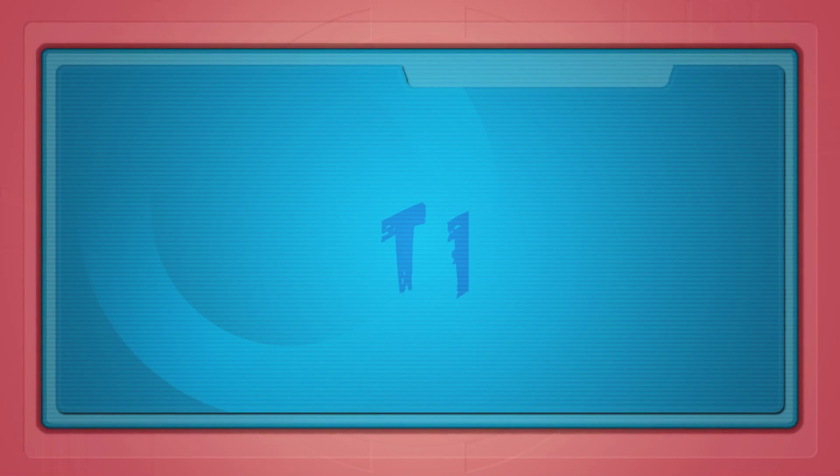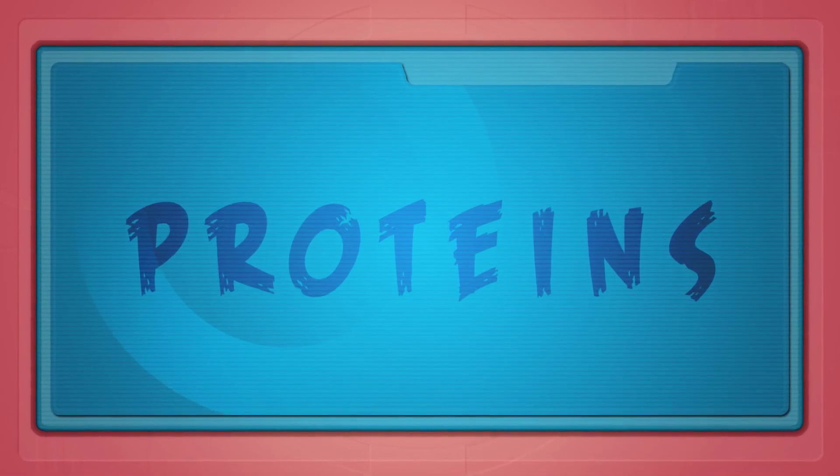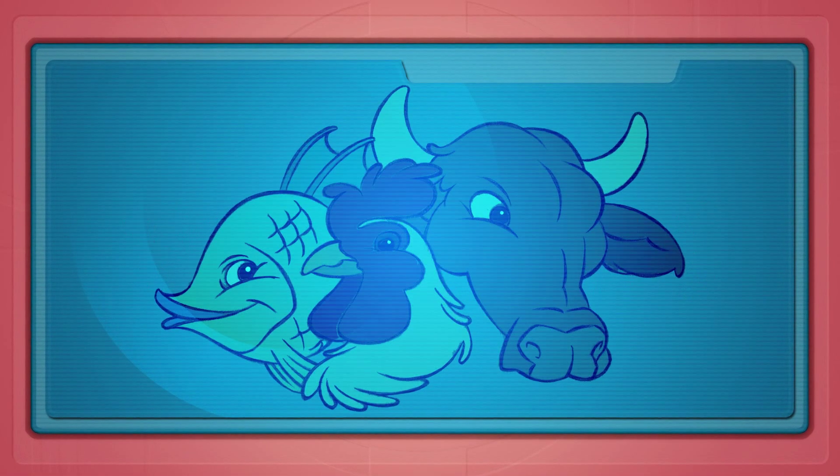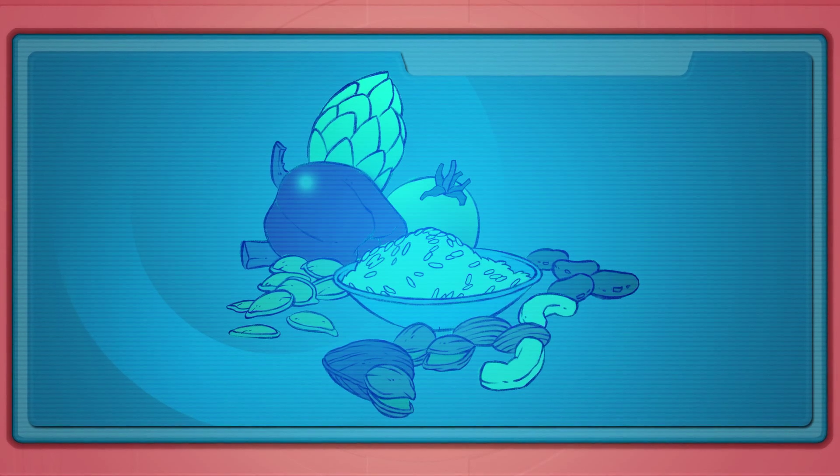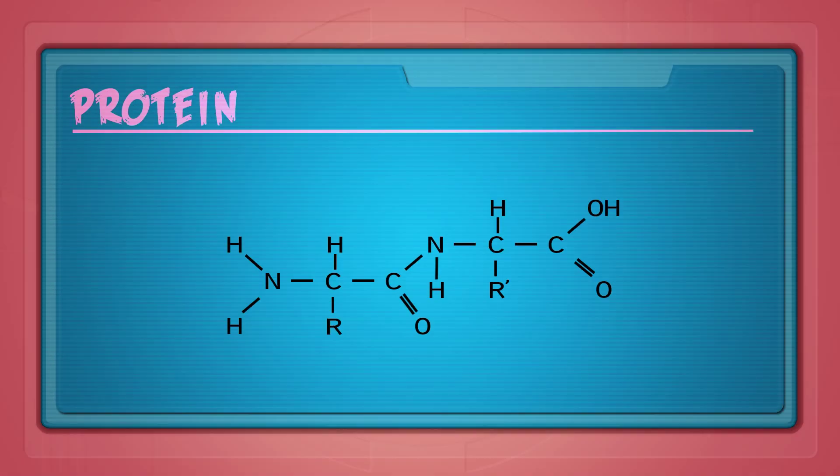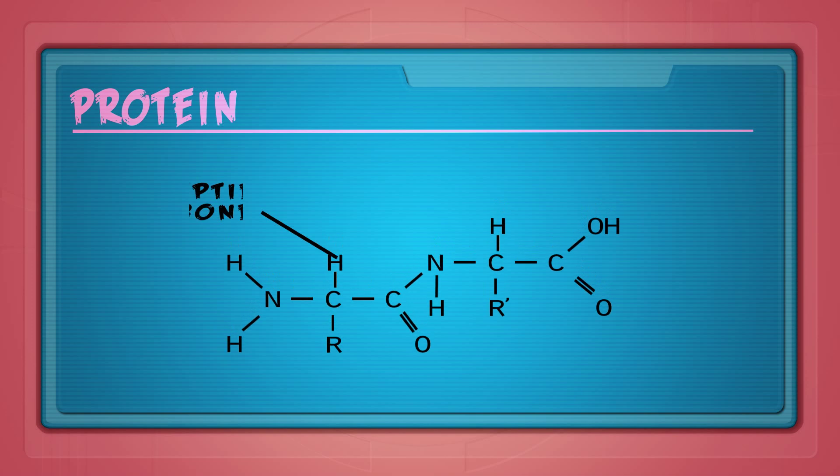The third food group consists of proteins. Proteins come from animal sources such as chicken, fish, and dairy, and from plant sources such as grains, seeds, nuts, and vegetables. Proteins are made of repeating units called amino acids, which are held together by peptide bonds.